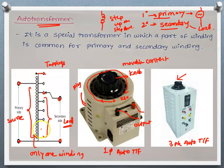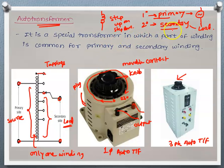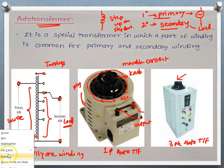This one winding, part of which is used as primary and the remaining part as secondary, operates on the same working principle as an ordinary transformer. When the primary carries current, flux is produced, which links with the secondary winding, inducing an EMF in it. The only difference is that an ordinary transformer has two separate windings, whereas here one winding serves both functions.